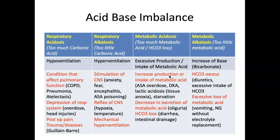Metabolic acidosis involves too much metabolic acid or bicarb loss — excessive production or intake of metabolic acid, or excessive loss of bicarb. Causes include ASA overdose, which is a medical emergency due to metabolic acidosis, diabetic ketoacidosis, and lactic acidosis — when tissues go into anoxia, such as a limb losing perfusion in a trauma, producing lactic acid. Starvation causes breakdown of ketones, leading to ketone acidosis. Decreased excretion of metabolic acid through the kidneys — such as oliguria — and bicarb loss through diarrhea or intestinal drainage are also causes.